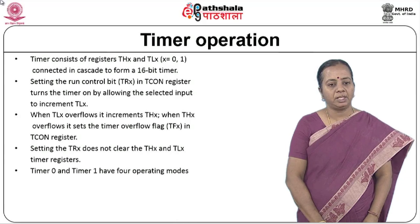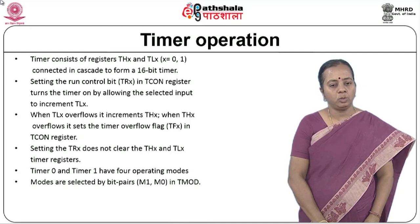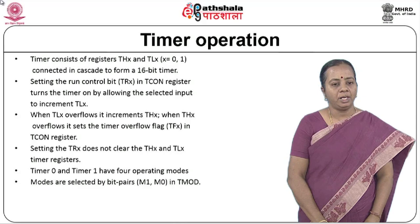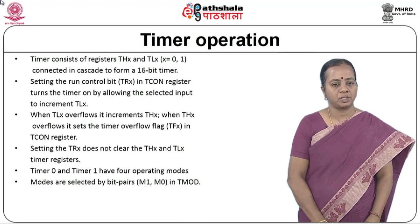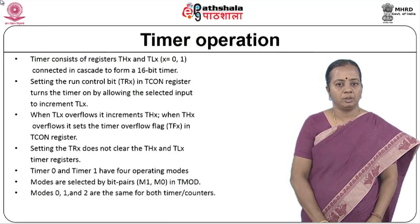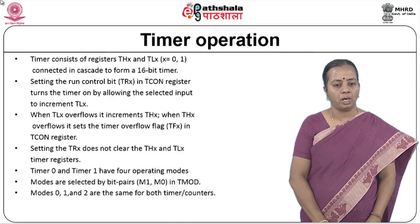Setting the TR bit makes the timer run. For timer 0 or timer 1, the TMOD register has two bits M1 and M0 combined together to set operating modes. There are four kinds of operating modes, but usually timer mode 1 and timer mode 2 are most commonly used. Mode 1 is for 16-bit operation; mode 2 is an 8-bit timer mode with auto reload. These things were covered in previous lessons, but when writing embedded C code we need to know what controls to set before writing code.